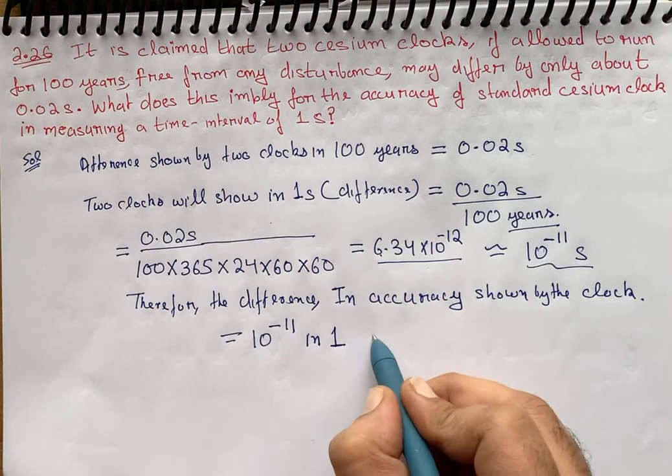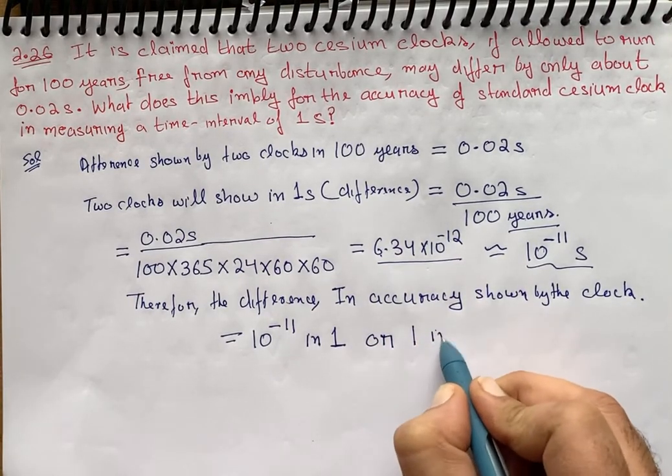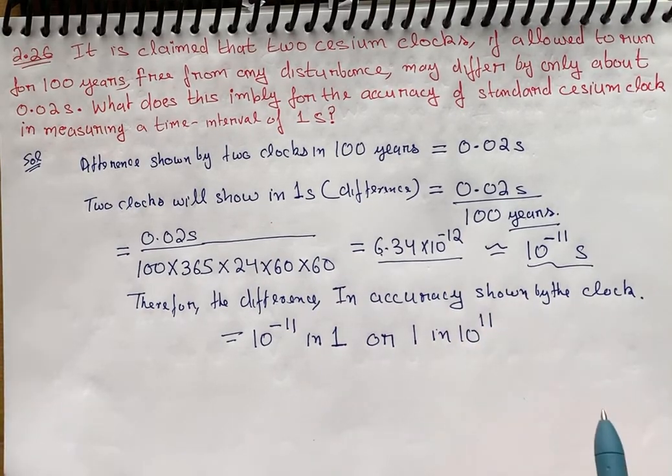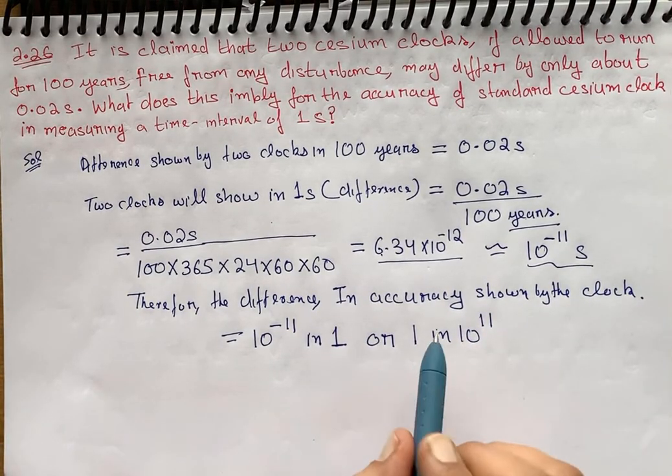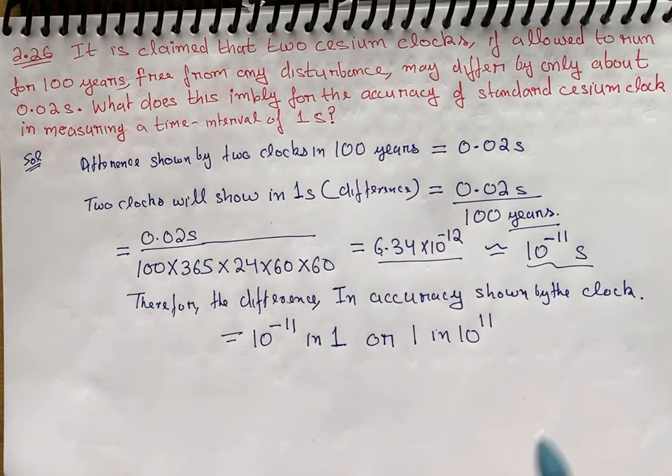So 10 raised to power minus 11 seconds in one second, or in other words we can also say that 1 in 10 raised to power 11. So this is the difference we got in one second.